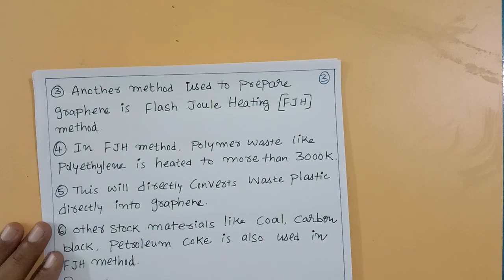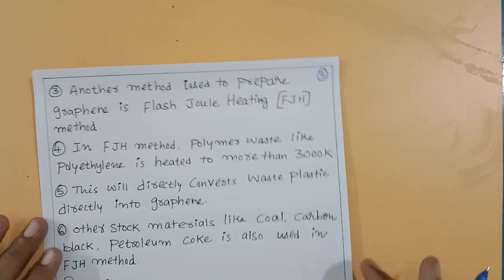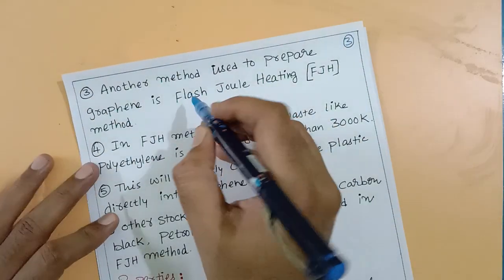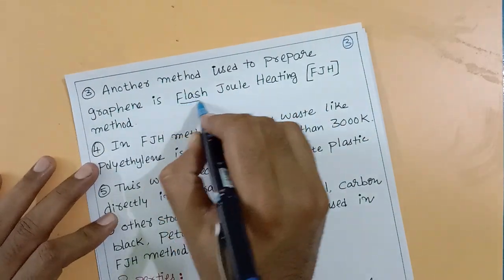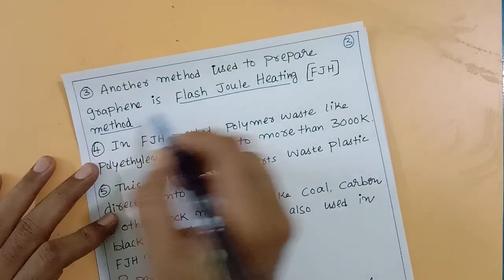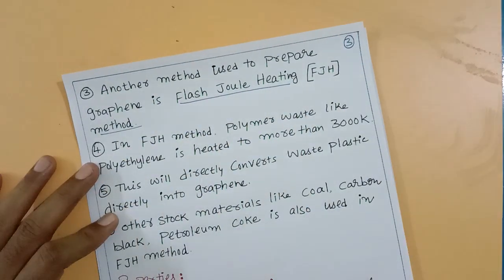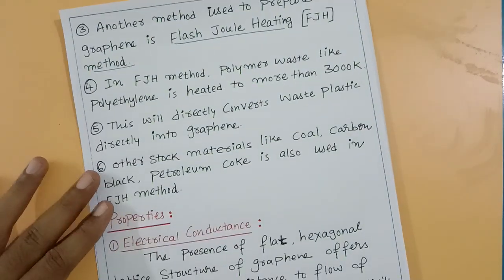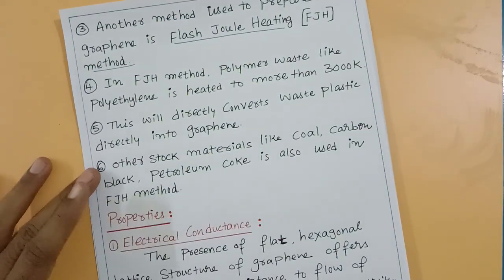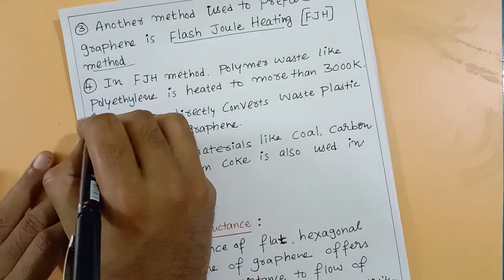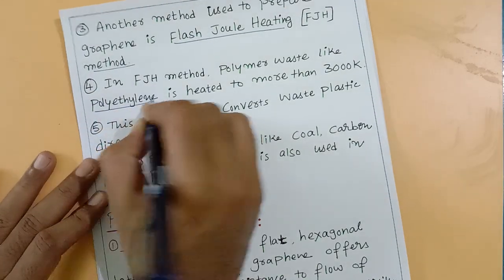Another method available to synthesize graphene is the Flash Joule Heating method, FJH. In the FJH method, polymer waste such as HDPE — high density polyethylene — polythene bags can be used as starting material.